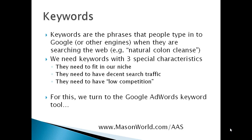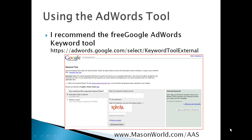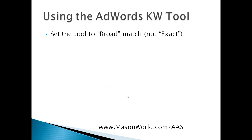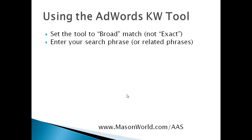For this sort of analysis, we turn to the Google AdWords keyword tool. It's a free tool and you can find it at adwords.google.com — select 'keyword tool external.' When you reach that screen, you've got a place where you can enter in a keyword phrase. So we'd put in something like 'colon cleansing.' I'll show you an example where I've done credit cards. First you set the tool to broad match — we don't want to use exact match here. We want to use broad match because we want to cast a wide net looking for results. Enter your search phrase or related phrases, such as 'colon cleansing.'